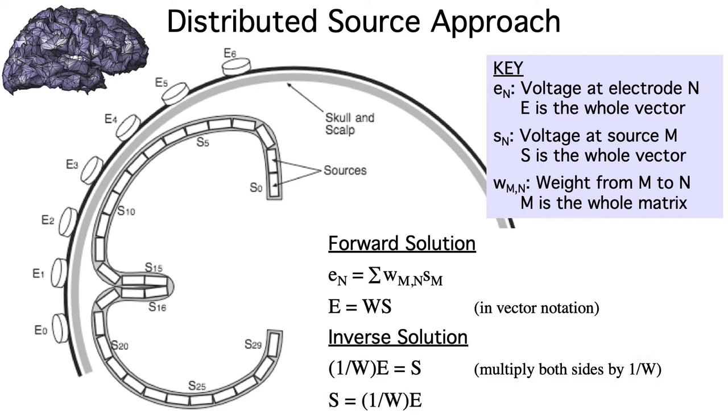We can then rearrange the equation. And now we see that S, the vector of source magnitudes, is equal to the vector of observed voltage values, E, multiplied by the inverse of the matrix of weights, W. So we can directly compute the magnitude at each patch of cortex from our observed data and the weights, which we can estimate from a structural MRI scan.